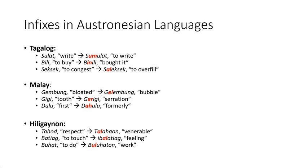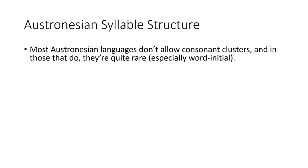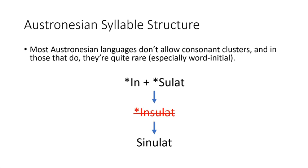However, some languages, like Tagalog and many of the other Austronesian languages, are replete with infixes to a seemingly inexplicable degree. The secret to this abundance of non-concatenative morphology lies in these languages' syllable structures — namely, they all forbid consonant clusters. So when a consonant-final word becomes prefixed onto a consonant-initial word, an illegal cluster is formed, and it looks like the way these were dealt with is by metathesizing the entire prefix with the initial consonant, the result being a plethora of infixes.